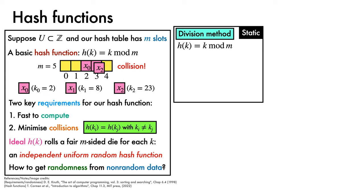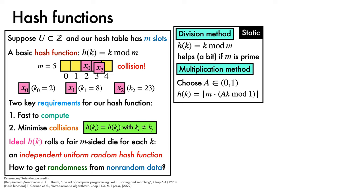In general, a naive implementation of this method tends to produce too many collisions to be useful, although it is helped a little by choosing M to be a prime number. The multiplication method is another simple approach. We choose a constant between 0 and 1, then we multiply this by the key, and take its fractional part via a modulo 1 operation, scale this up by M, and then apply a floor operator. This allows more flexibility in the choice of M, we don't need to make it prime for example.